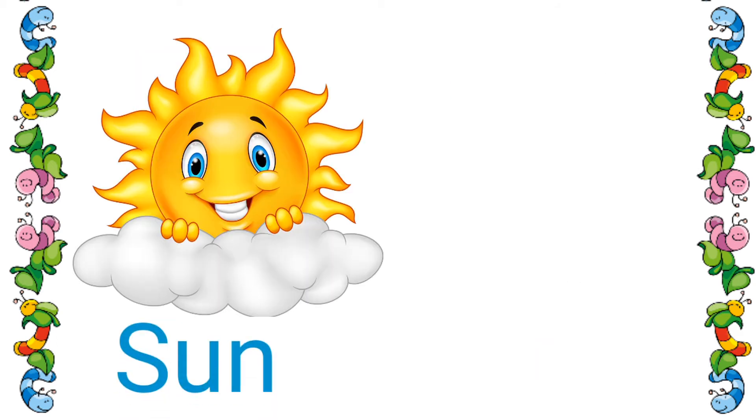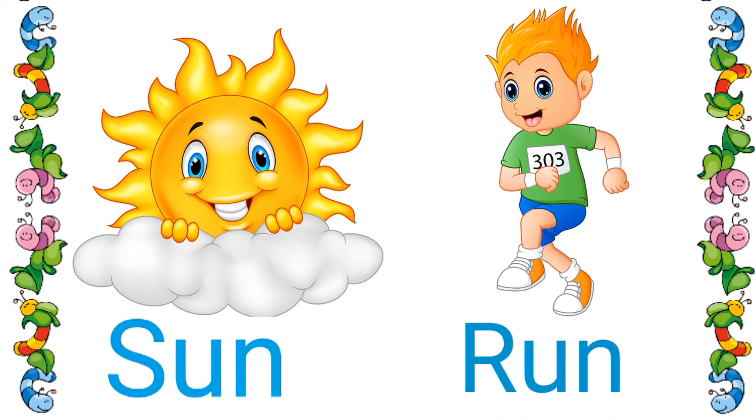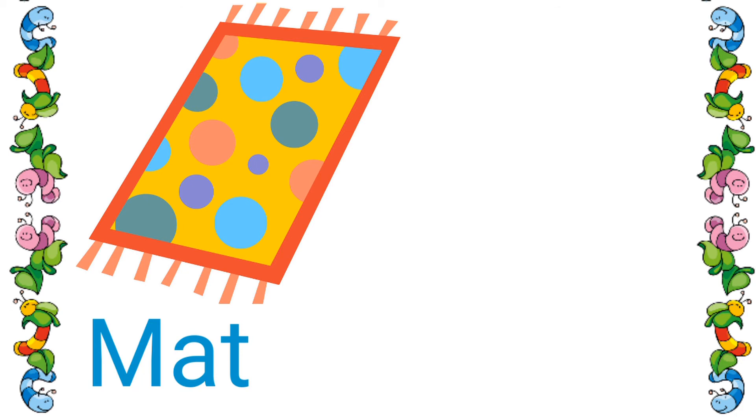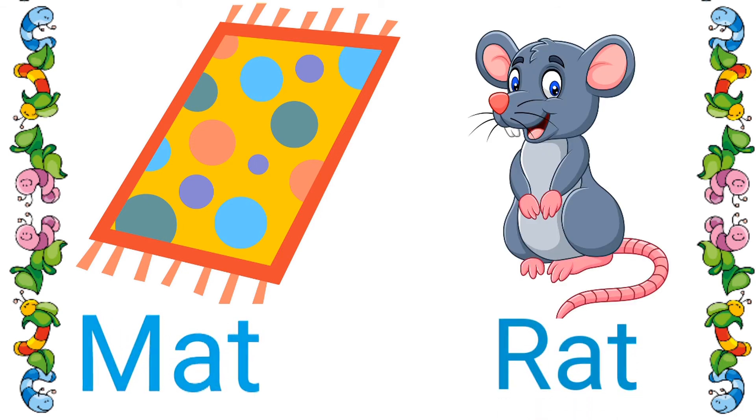Sun. Then look at the next picture. The boy is running, so run. Sun. Run. Then the next one. Mat. Then the next picture is rat. Mat. Rat.